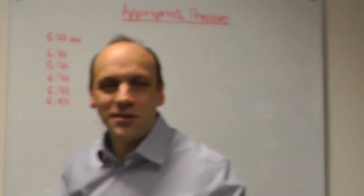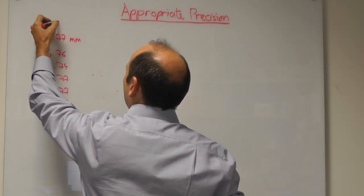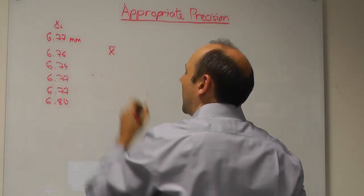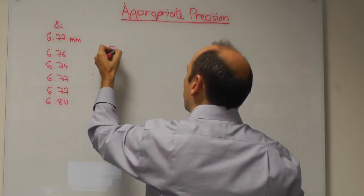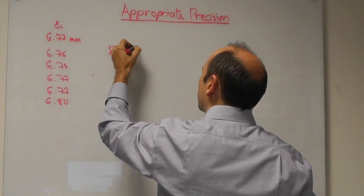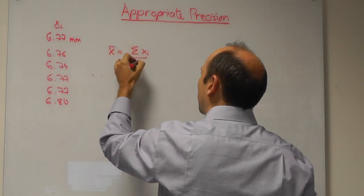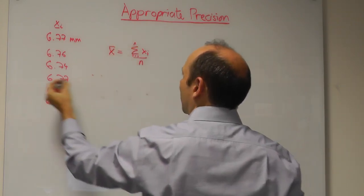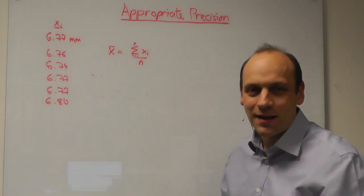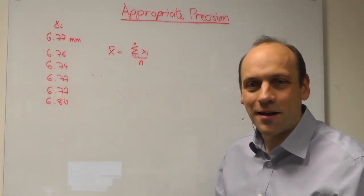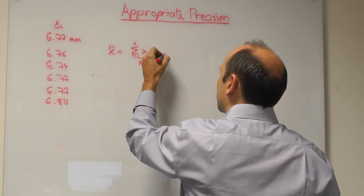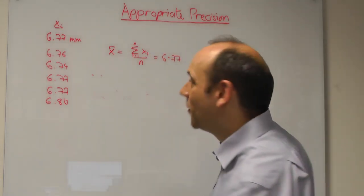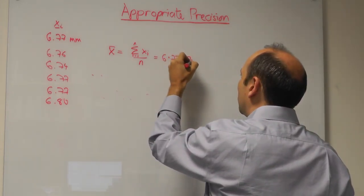I could actually do something like take the average. So if these are my measurements Xi, I could say that the mean of X, X-bar, was found by taking the sum of all the measurements Xi and dividing by the number of observations, from i equals 1 to n. There's six of them in this case. And if I do that, I get a mean of 6.7717 millimeters.